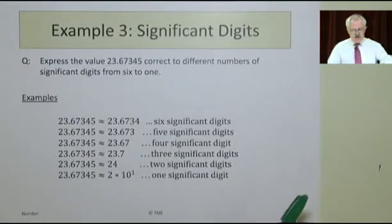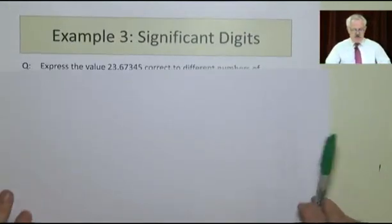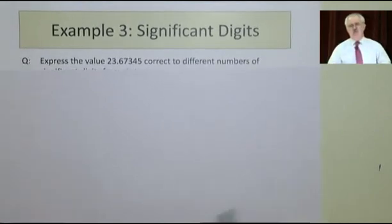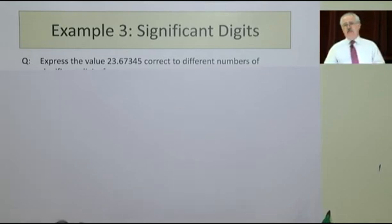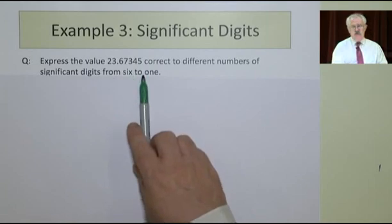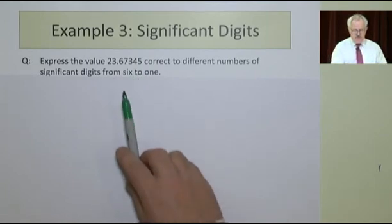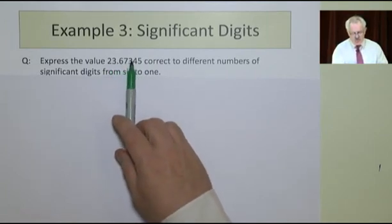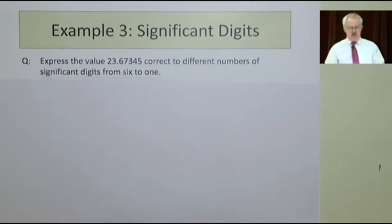We're asked here to look at significant digits, and we have an answer here: 23.67345. You often get a number on your calculator that's got too many decimal places in it, so you want to sort it out. Will you make that 6 significant digits? 1, 2, 3, 4, 5, 6. There are 7 digits there.